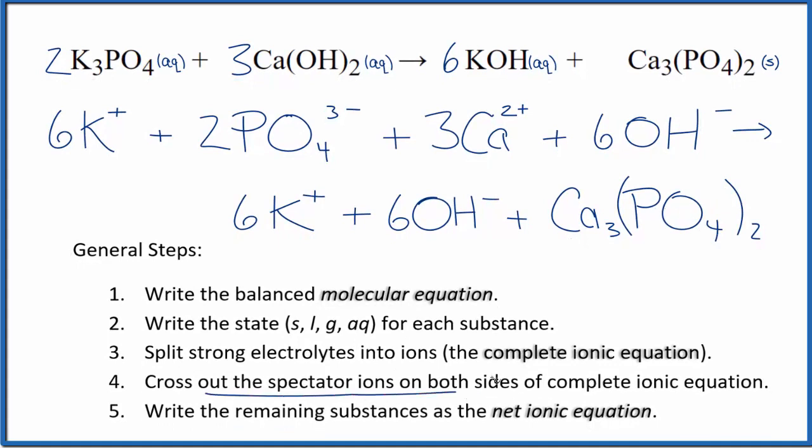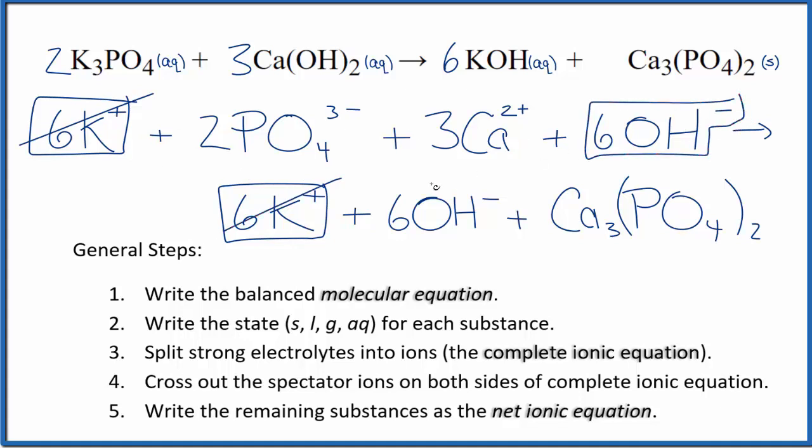Now we cross out the spectator ions. They're on both sides of that complete ionic equation. They haven't changed, so we're not really interested in them. In the reactants on top, six potassium ions. In the products, we also have six potassium ions. These are spectator ions, cross those out. We have six of these hydroxide ions here in the reactants and in the products. The spectator ions, we're going to cross those out. What's left, that's the net ionic equation for potassium phosphate plus calcium hydroxide. I'll clean it up and write the states. We'll have our net ionic equation.